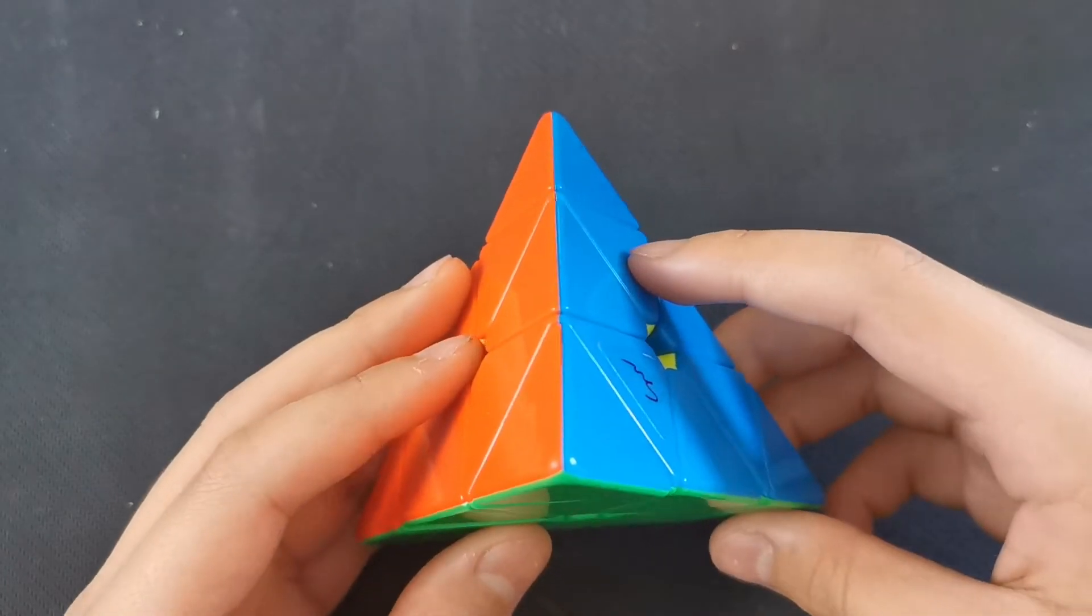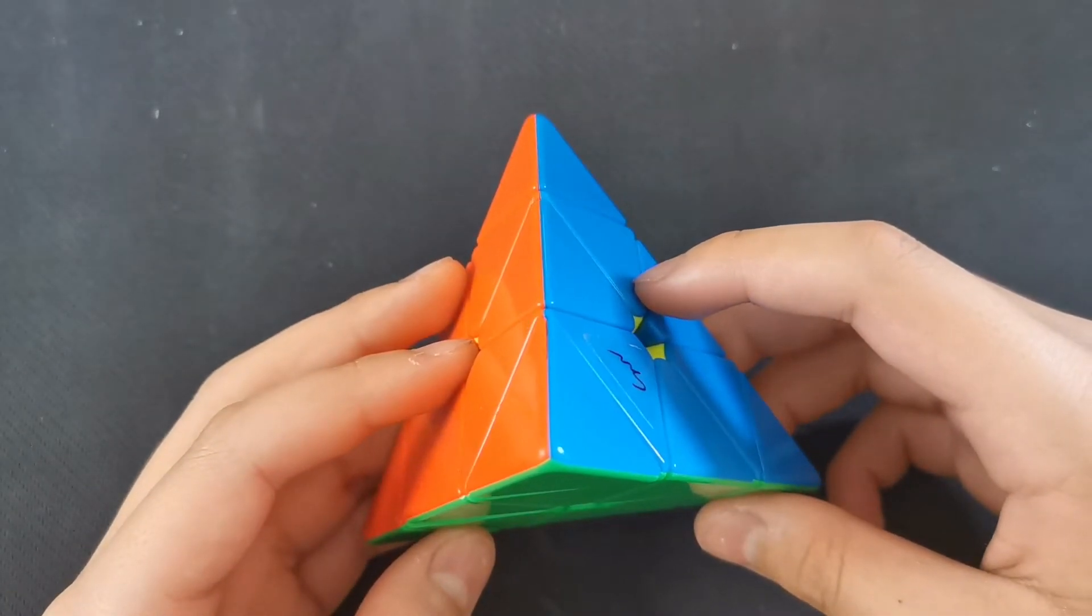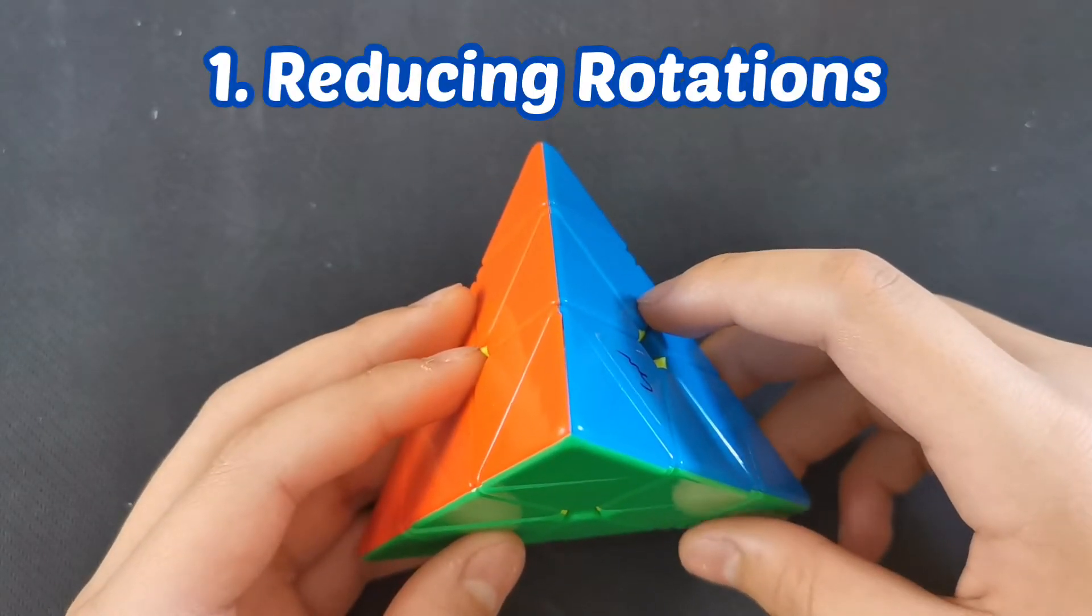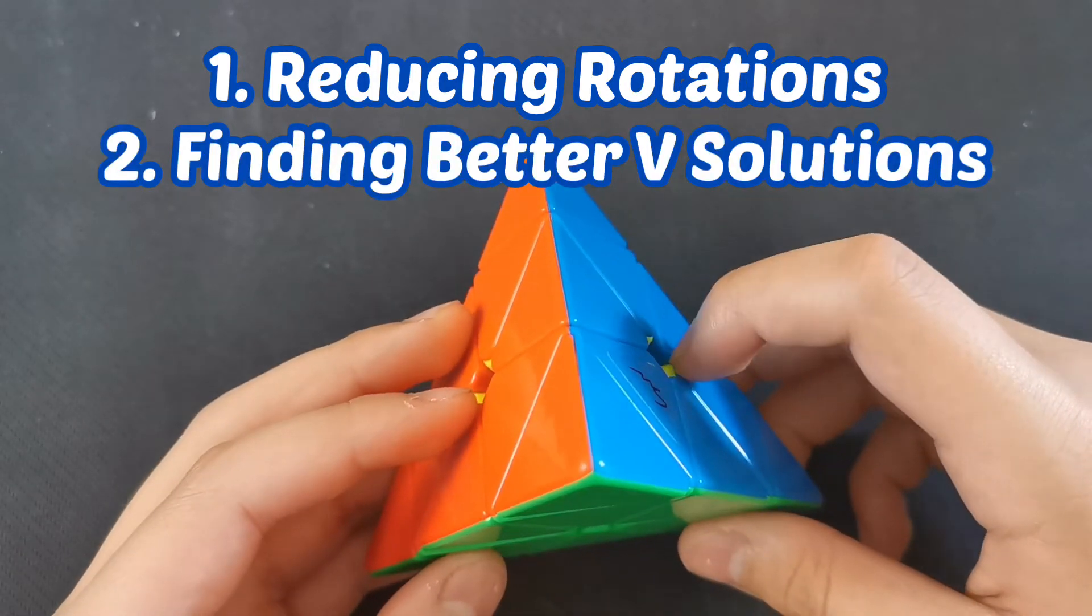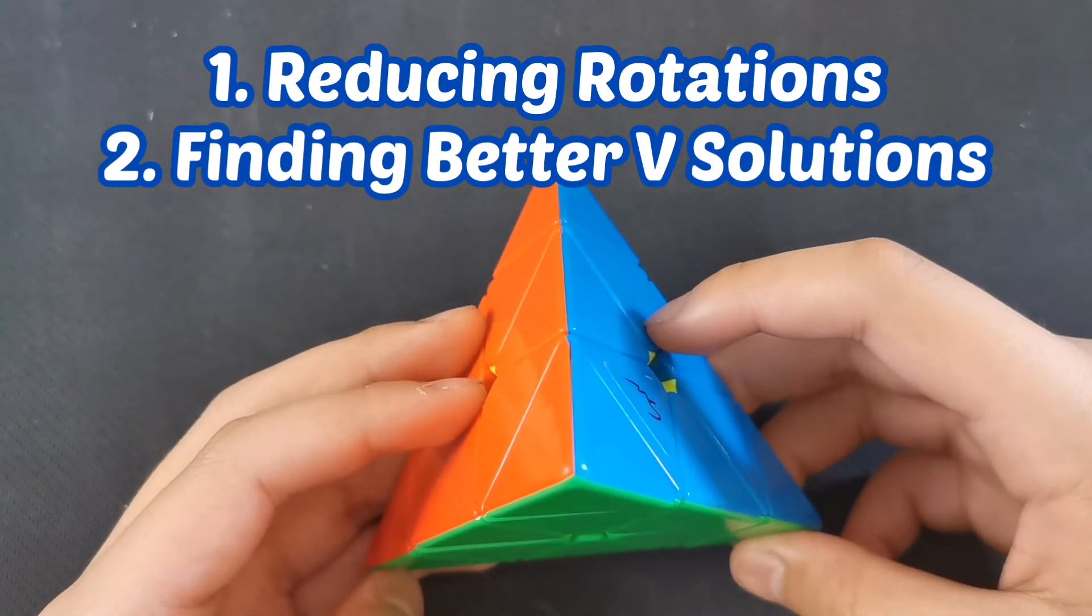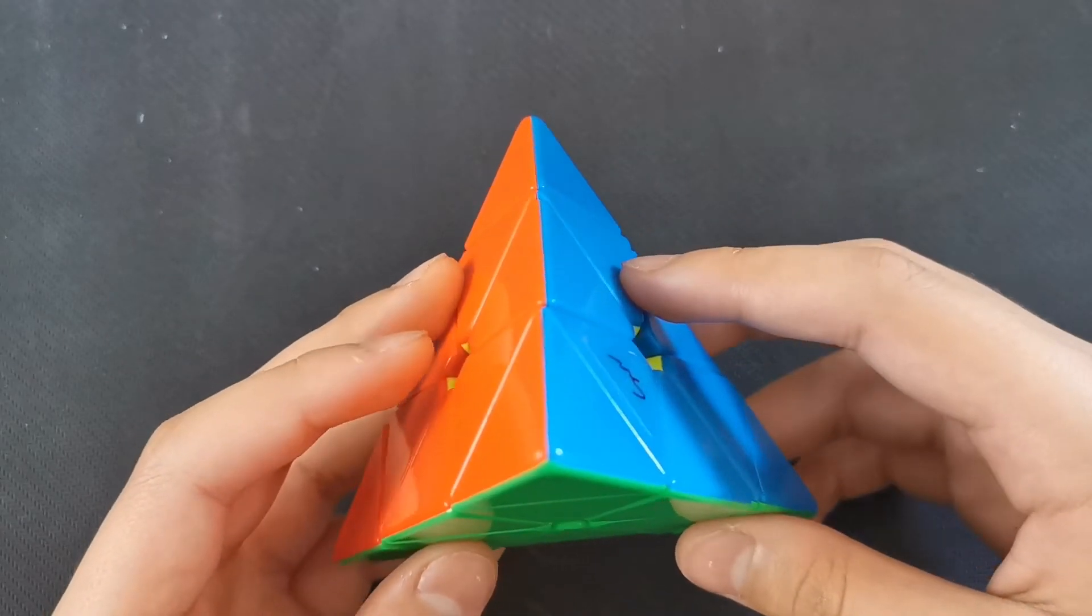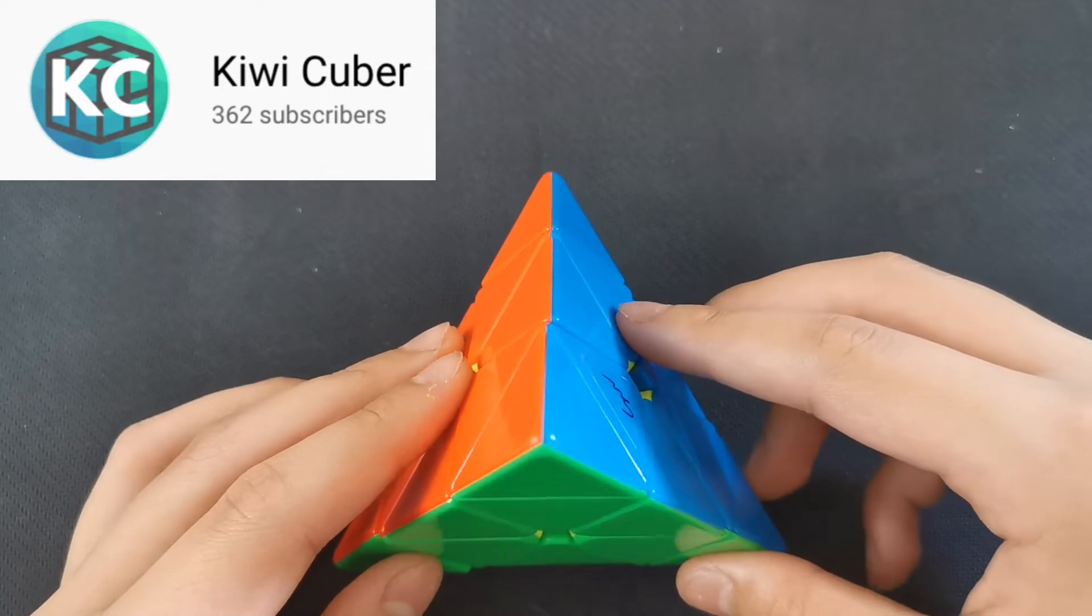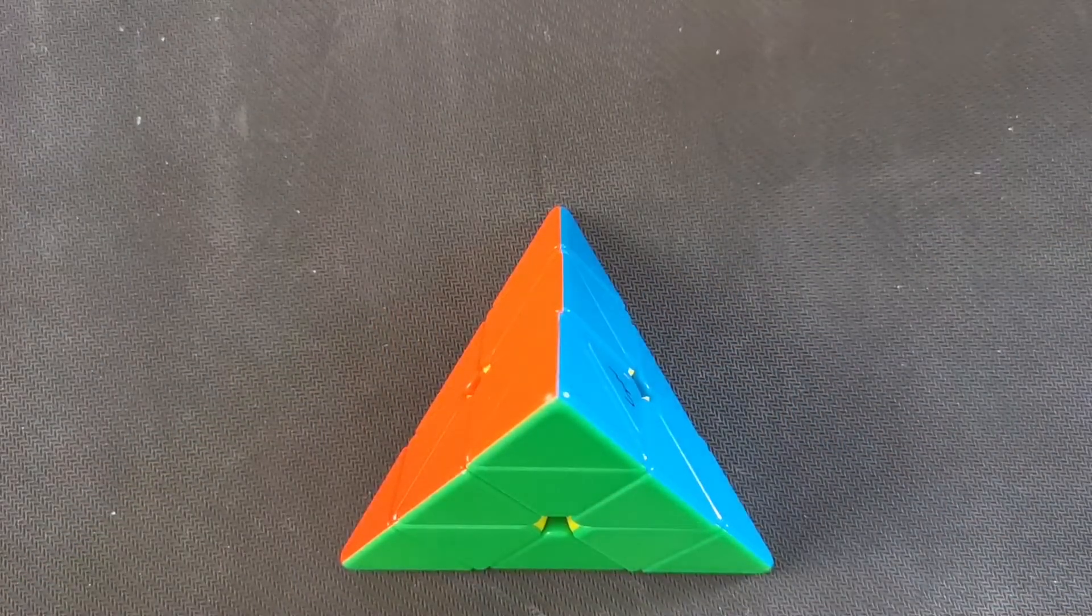So overall, your solves are actually very good, but there's just some minor changes that you can do, which is reducing rotations and trying to look at better V's and find ways to solve pieces while solving the centers. And yeah, I think that's it. Maybe try spamming TPS a bit, but yeah, I think that's all. Thank you to KiwiCuba for sending me her video to critique, remember to like and subscribe, and please go subscribe to KiwiCuba, she makes very nice content.